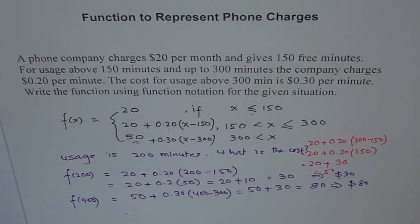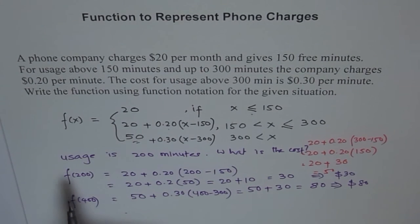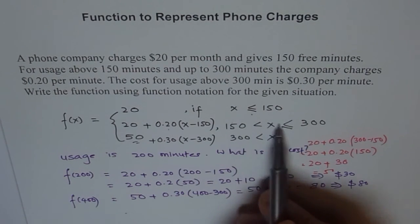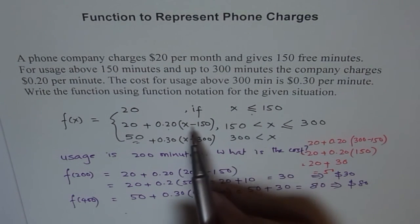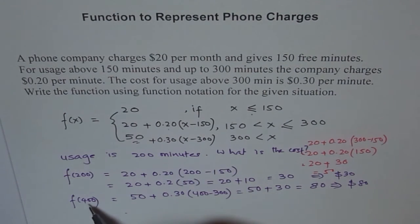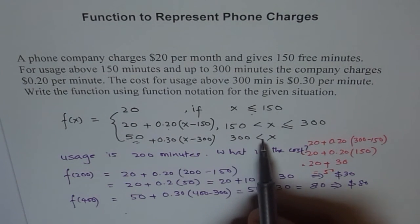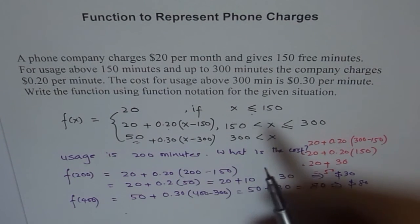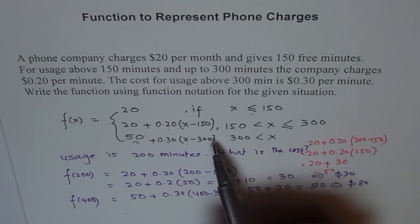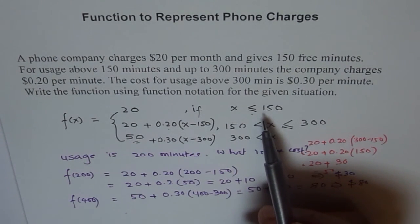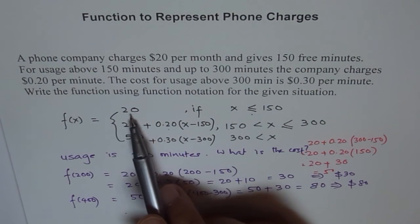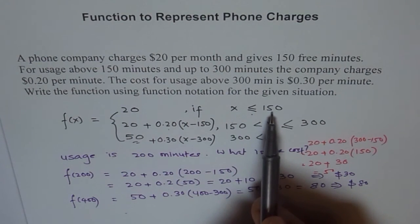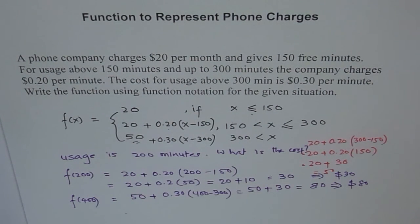So that is why we need to understand how to use the piecewise function properly. So if we are asking for something like 200, which is within this range, domain I should say, we have to use this part of the function. But if I am asking for something which is in this domain, then I have to use that part of the function. And if I say, well, how much are the charges for usage for about 100 minutes, the answer is 20, because for anything less than or equal to 150, a flat rate of 20 is being charged. I hope you understand.